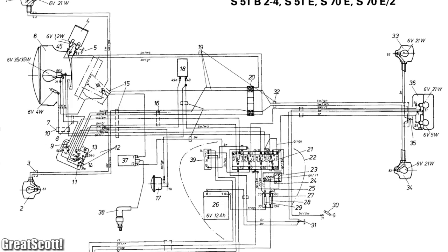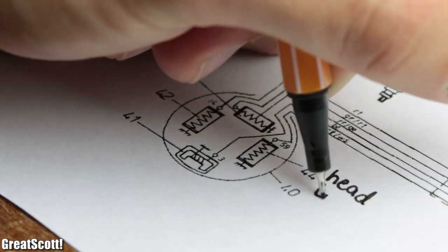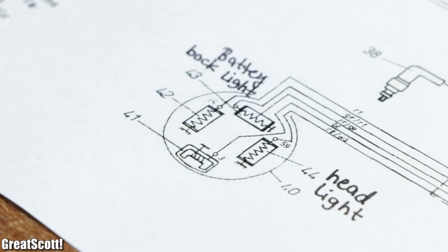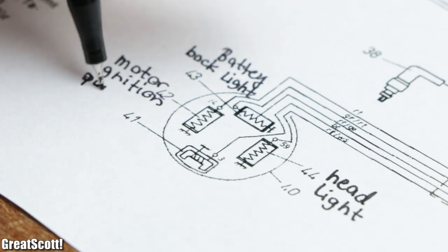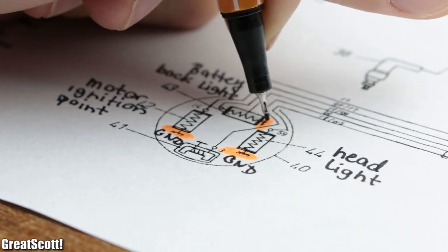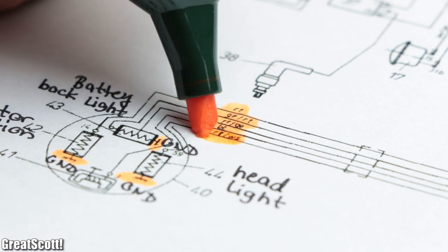So for the next steps, I firstly got myself a circuit diagram of the Simson to find out that we got one coil for the headlights, one coil to charge the battery and power the backlight, and one for the motor's ignition points. Those coils feature one common star point tied to ground and their wires are luckily color coded.